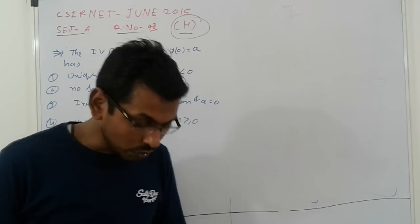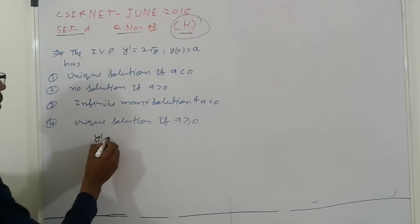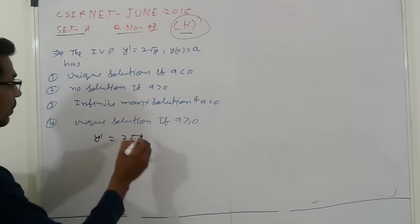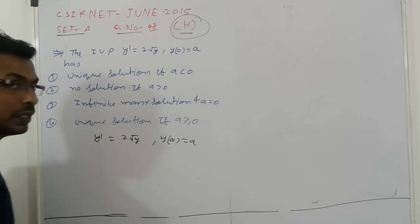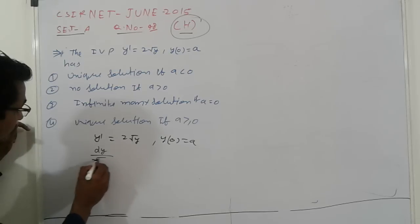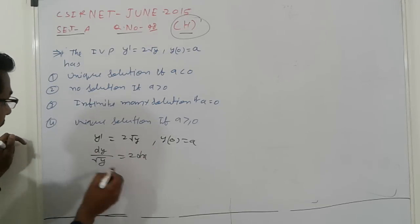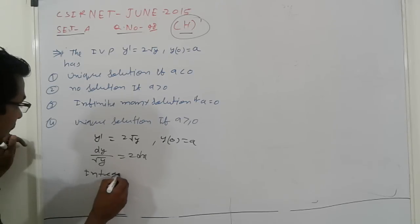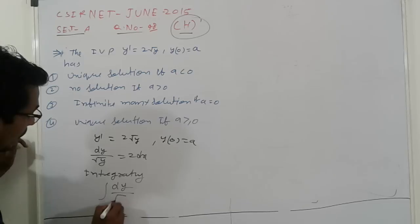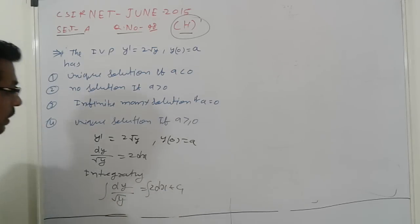Now come to the point. This is given: y' = 2/√y and y(0) = a. First find out the solution. So dy/√y = 2dx. Now integrating both sides.